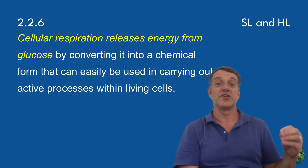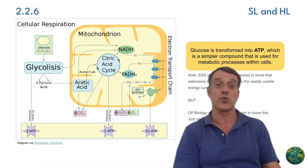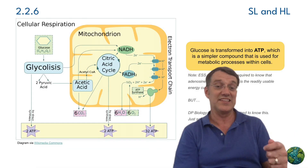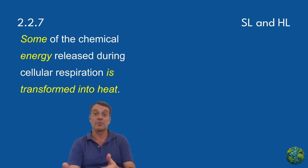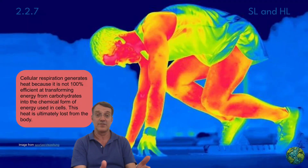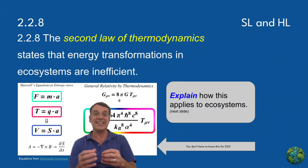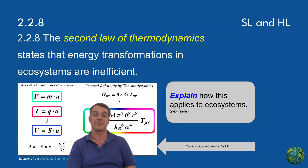Cellular respiration is crucial for all living organisms because it releases the energy stored in glucose. However, this process isn't perfectly efficient. Some chemical energy is always transformed into heat, which is lost to the environment. This inefficiency is described by the second law of thermodynamics.